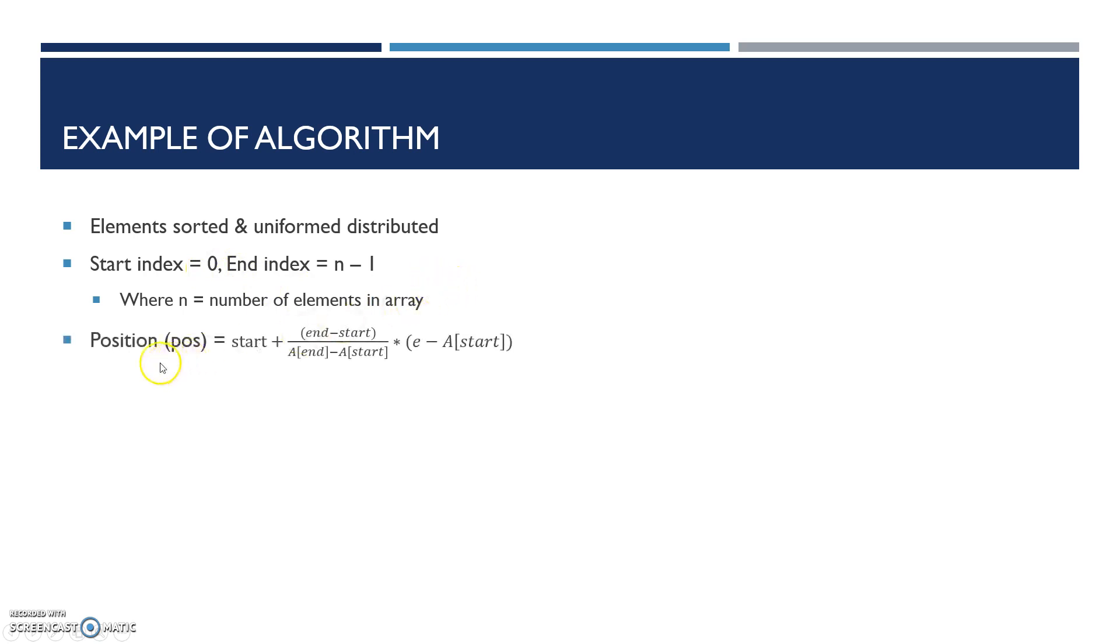The current position that you're searching will have this formula: start index plus (end index minus start index) over (A[end] minus A[start]) multiplied by (e minus A[start]), where A[index] is the value in your array at that index and e is the element you're searching for.